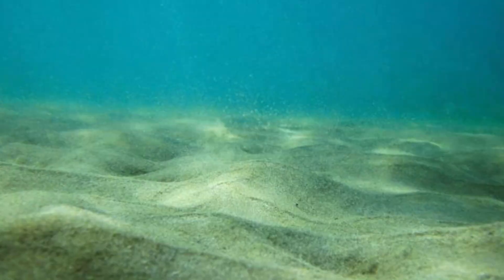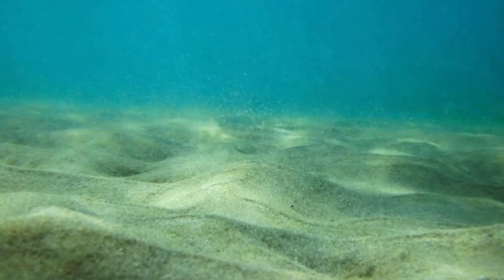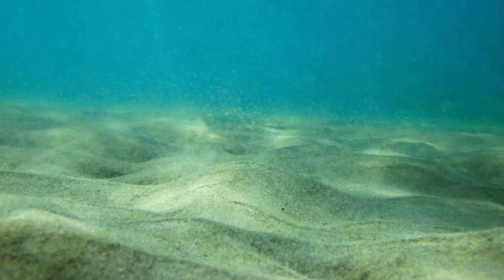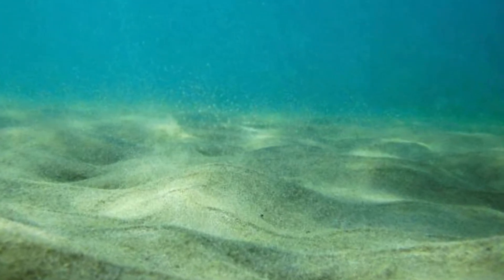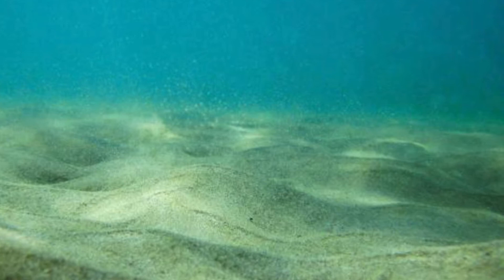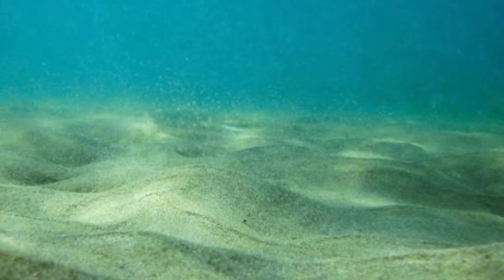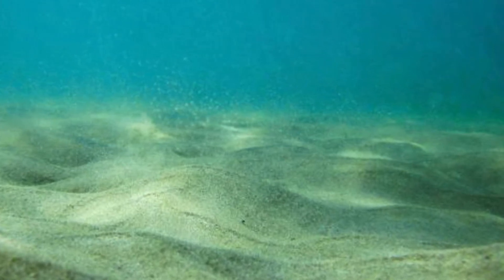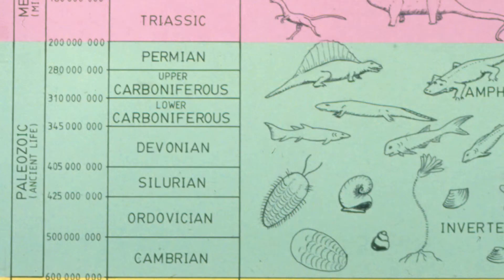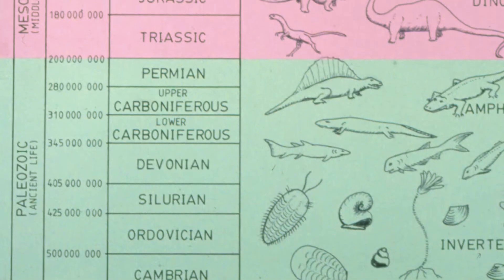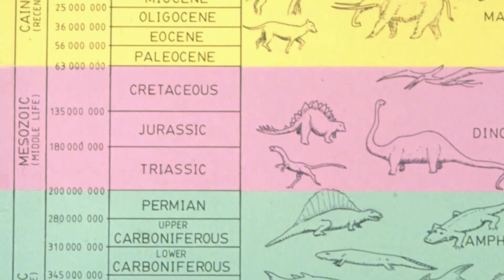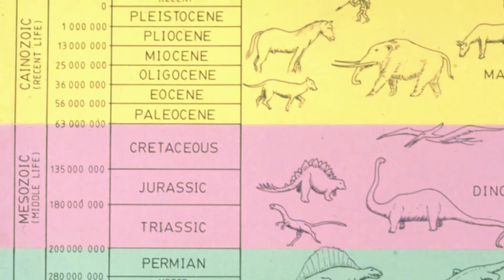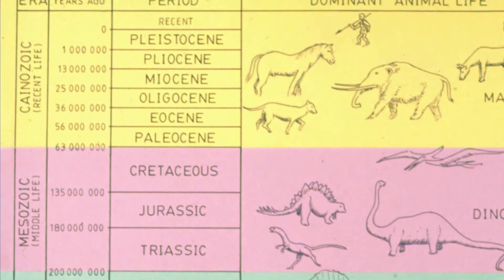He based his whole timescale on the idea that sediments are being laid down at one-eighth of an inch, or three millimetres, every century, and that it has always been the same since the beginning of time. He made a theoretical — or should we say mythical — stack of rocks more than 11 kilometres tall, and then deduced 600 million years of deposition in the oceans.